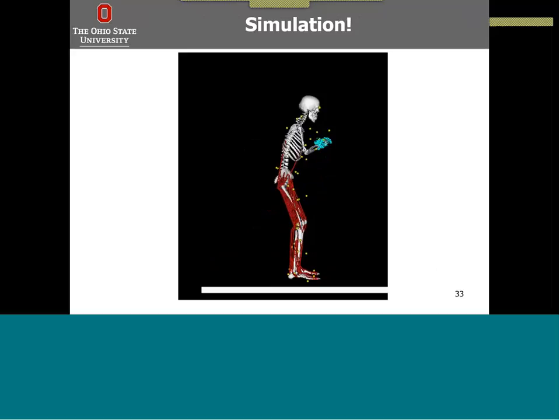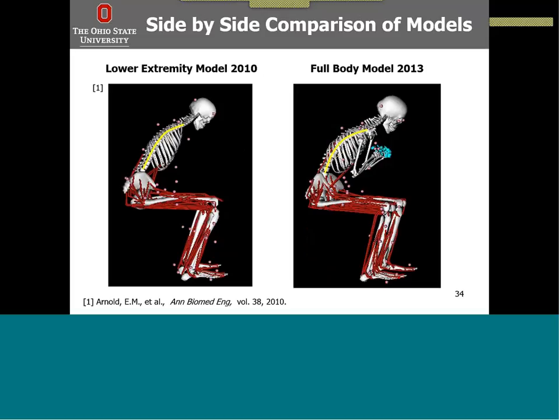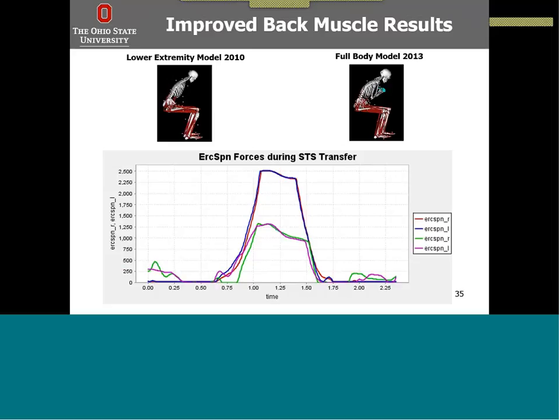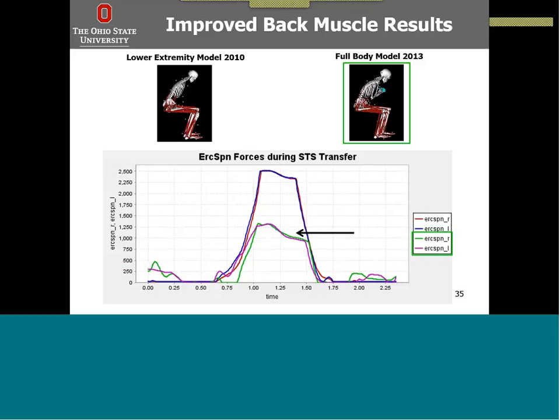For a side-by-side comparison, looking at that forward-leaning phase: on the left we have the Lower Extremity Model 2010, and on the right our Full Body Model 2013. You can see that on the right, the curvature of the spine is being captured by the model, whereas in the Lower Extremity Model 2010 it is not. Looking at the back muscle forces again, the lower extremity model reaches that peak of 2,500 N, but the Full Body Model 2013 has decreased that by a large amount, which seems more anatomically realistic, especially in this young, healthy population.